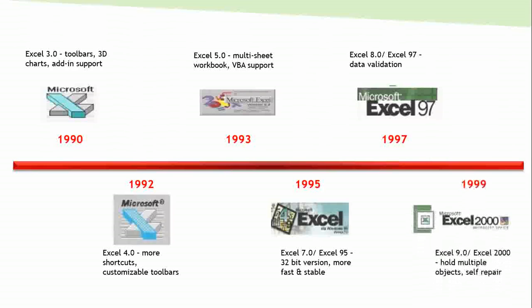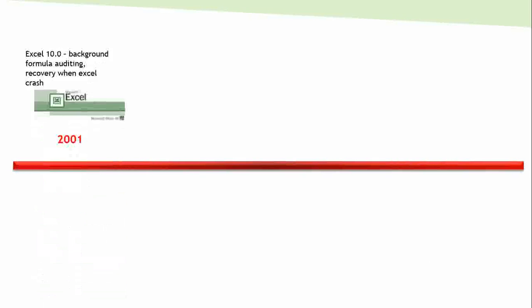In 1999, Excel 2000 (Excel 9.0) had the function of self-repair — Excel could repair itself if it crashed. Then in 2001, Excel 10.0 came up with background formula auditing and Excel recovery whenever Excel crashed.